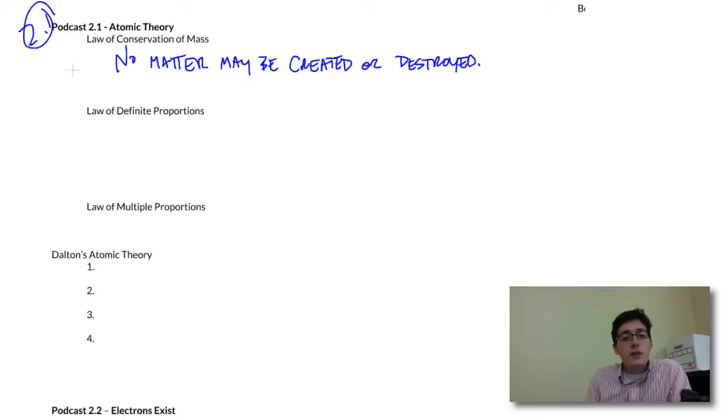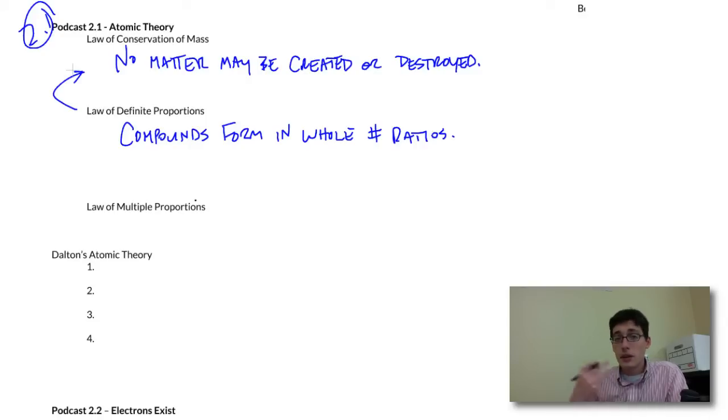The second law is the law of definite proportions, and this is based on the law of conservation of mass. This says that compounds form in whole number ratios. That means we cannot have like half of an atom as part of a compound. There has to be an entire atom forming, or an entire compound forming from entire atoms. And these are chemical formulas that we see like H2O or NaCl. This is table salt. You eat this every day and you drink this every day. So compounds are always going to be in whole number ratios.